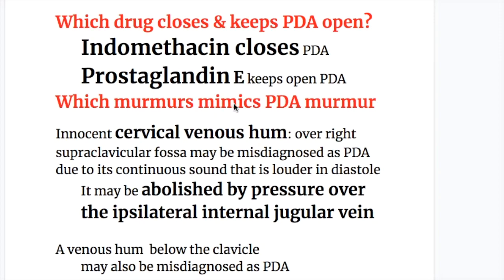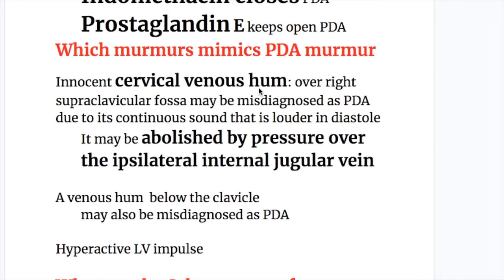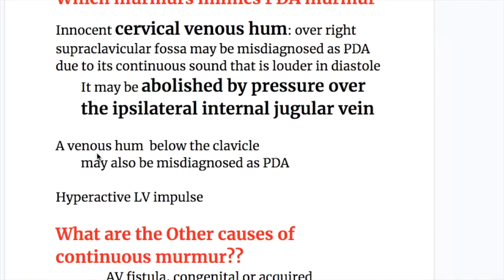An innocent cervical venous hum over the right supraclavicular fossa may be misdiagnosed as PDA due to its continuous sound that is louder in diastole. It may be abolished by applying pressure over the ipsilateral internal jugular vein.